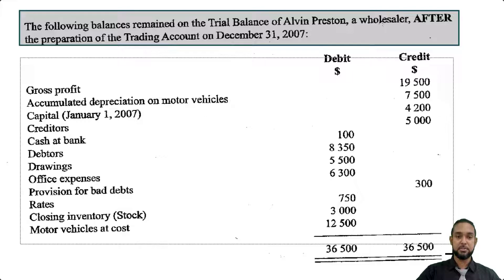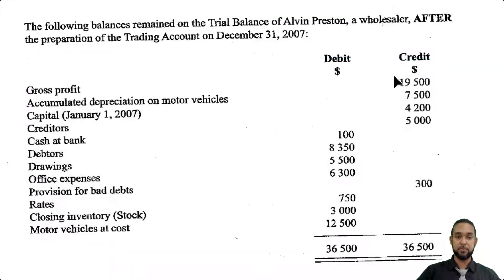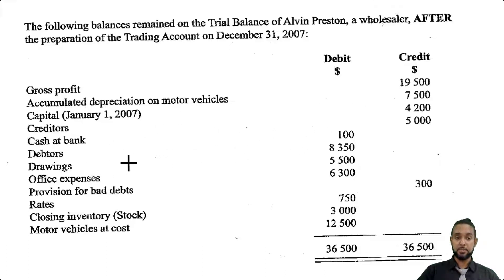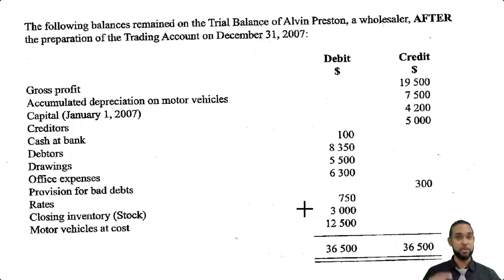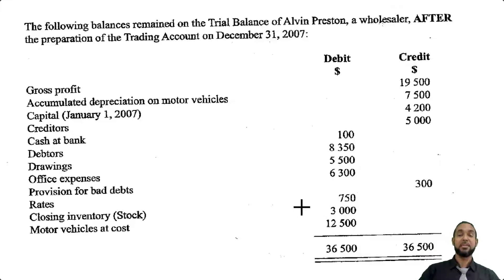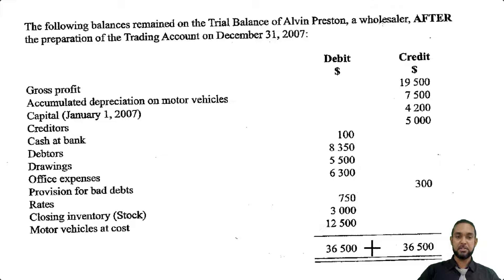Let's pull up the trial balance. The first item you are seeing is gross profit. You're also seeing accumulated depreciation of motor vehicles, capital at January 1st 2007 — that's the opening capital — creditors $5,000, cash at bank, debtors, drawings, office expenses, a provision for bad debts, rates as an expense, and closing stock. Normally we see closing stock in the additional information below the trial balance, but because we've done the trading aspect of the income statement, the closing inventory will now be part of the trial balance. And then motor vehicles at cost — our trial balance agrees.